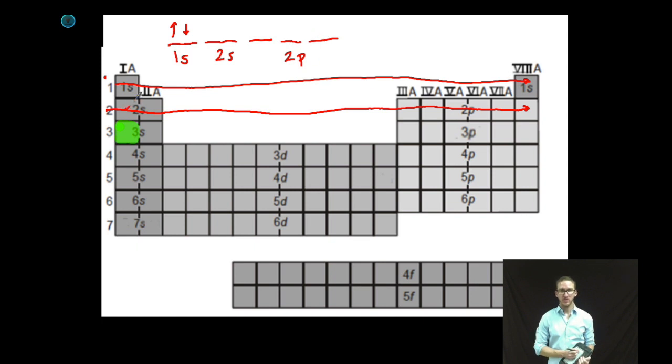Now in the 2s orbital, I can once again fit two electrons. Again, one facing up, one facing down. Opposite spins.